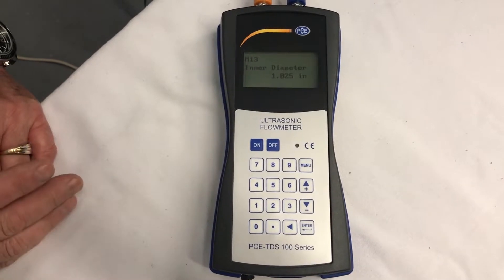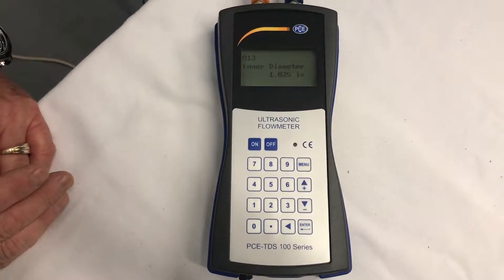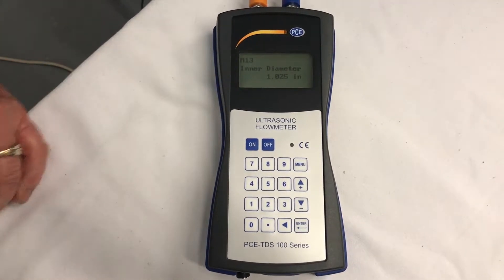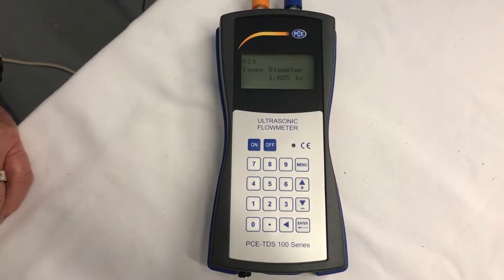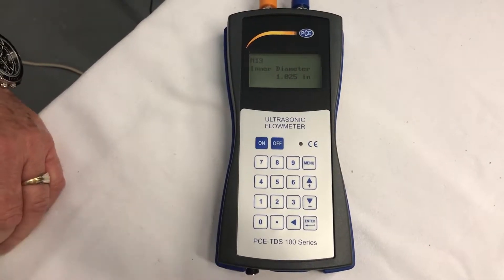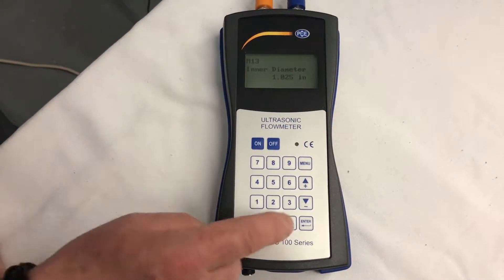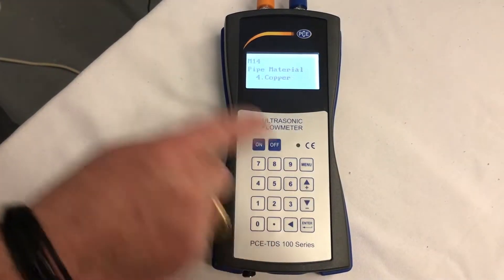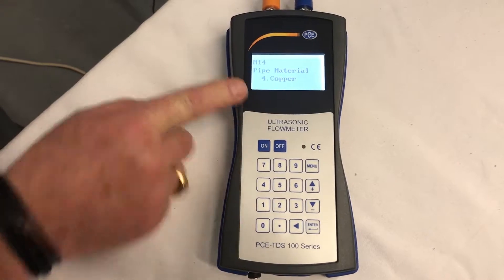Now that we've got our information about our pipe or our tube, copper tubing, into the meter, we're going to go to the next part of selecting what type of material is the pipe. So we have to go, according to our book, we have to go to M14. We can use our down arrow to go M14. We are using copper.